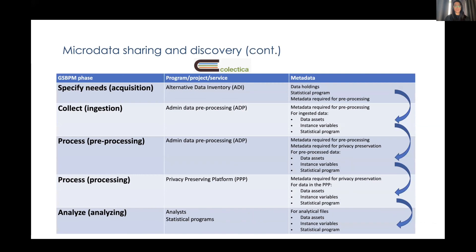A real-time example of a proof of concept for Colectica is the documentation of administrative data from start to finish throughout our administrative data process. Statistics Canada's administrative metadata will be housed in Colectica using the DDI standard, and as it goes through the Generic Statistical Business Process Model, we'll capture that metadata once it's created and reuse it throughout the various phases, data sets, and processes.